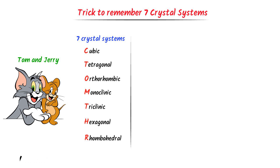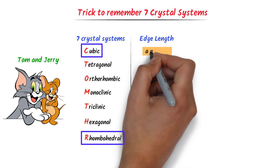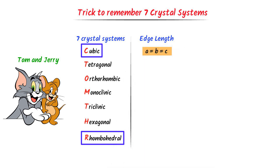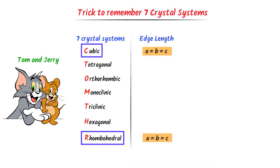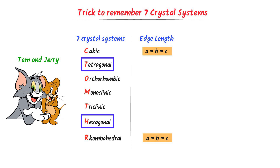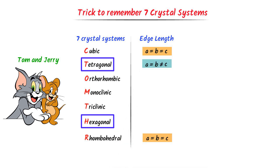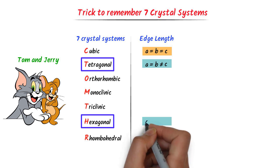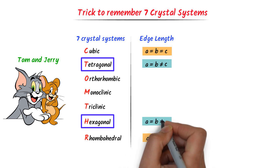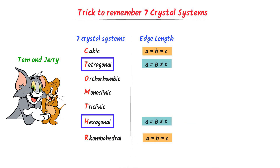What about their respective edge lengths? The first and last one have the same edge lengths: A equals B, B equals C. The second and second-to-last have the same edge lengths: A equals B, but B does not equal C.